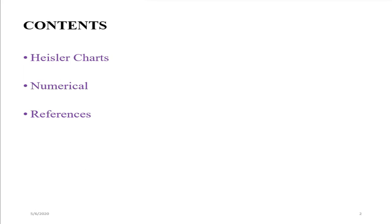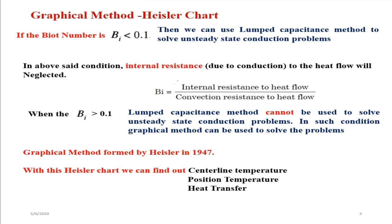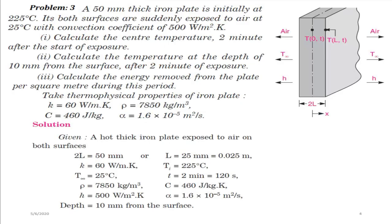Before that, we will see when to use the graphical method or Heisler chart. If the Biot number is less than 0.1, we can prefer the lumped capacitance method. If the Biot number is greater than 1, lumped capacitance method cannot be used, and we prefer the graphical method — the Heisler chart. With it we can find central line temperature, position temperature, total heat transfer rate, or instantaneous heat transfer rate.